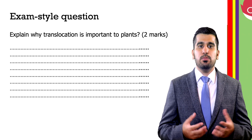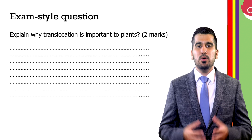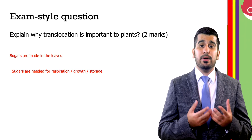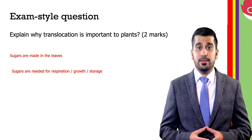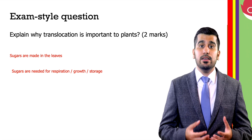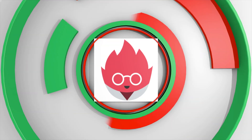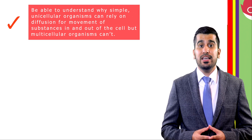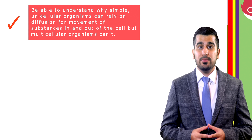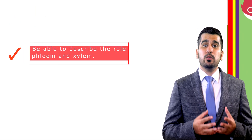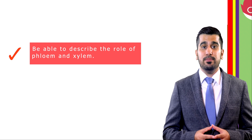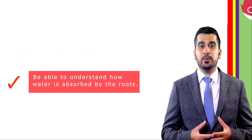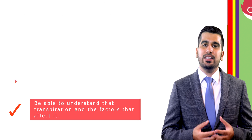Explain why translocation is important to plants. Sugars are made in the leaf by photosynthesis. The sugars are then needed for respiration. You should now be able to understand why simple unicellular organisms can rely on diffusion for the movement of substances in and out of the cell, but multicellular organisms can't. Be able to describe the role of the phloem and the xylem, understand how water is absorbed by the roots, and define transpiration and understand the factors that affect it.